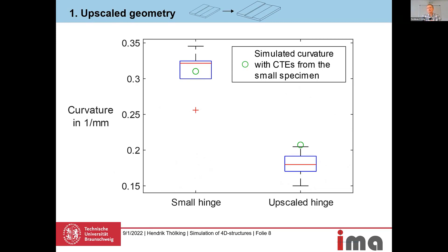The first important insight is that the simulated result for the small hinge — the simple bending body — lies directly within the printed results. This is interesting because it means that when there are no geometrical changes between the simple bending body and the simulated structure, we have a perfect simulation result. Any occurring errors can be directly attributed to the geometrical change made between step one and step four.